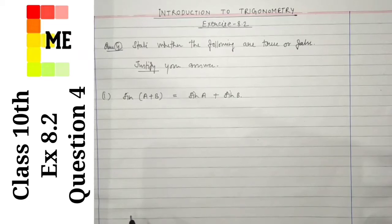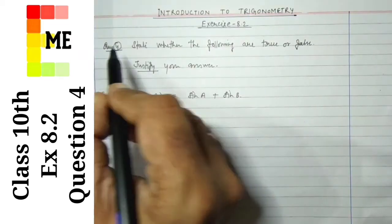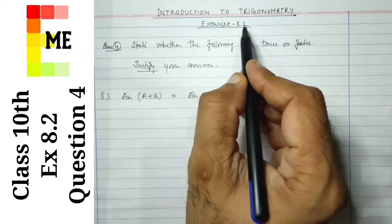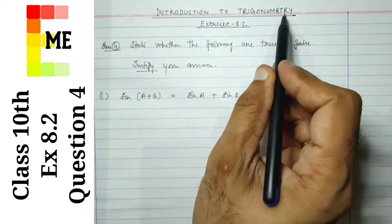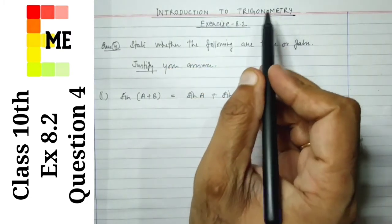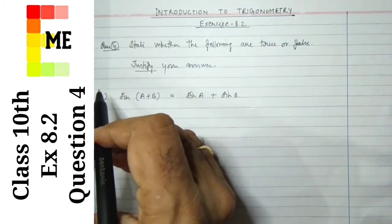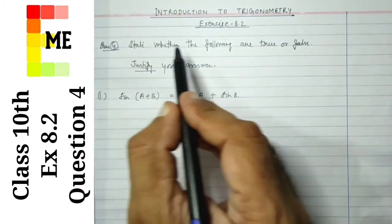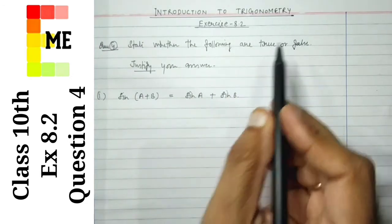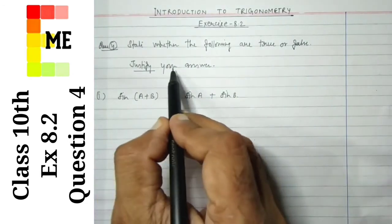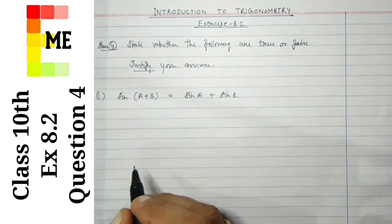Hello students, today we are going to do question number 4 of exercise 8.2 of the introduction to trigonometry chapter. In question number 4, we have to state whether the following are true or false and justify your answer.